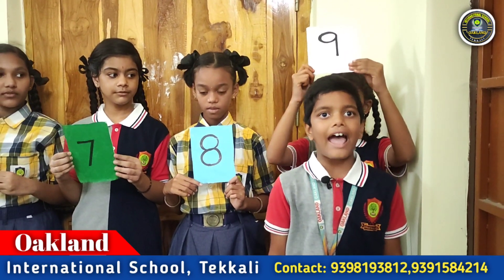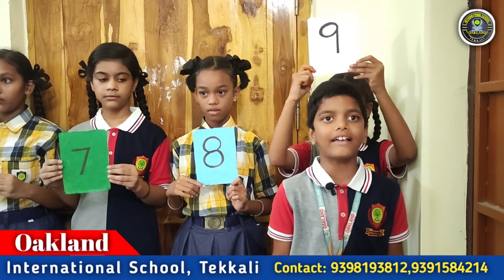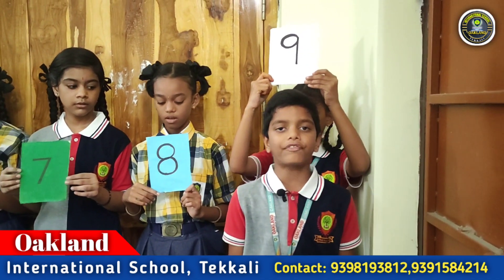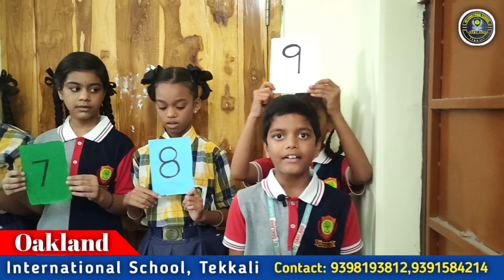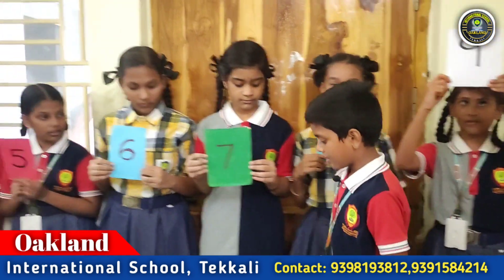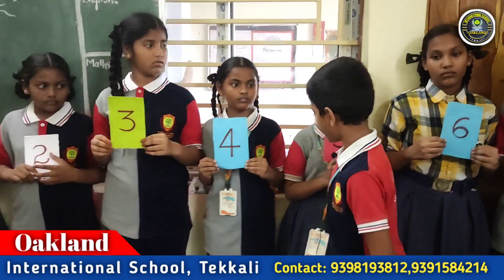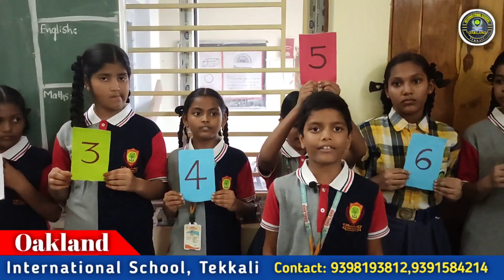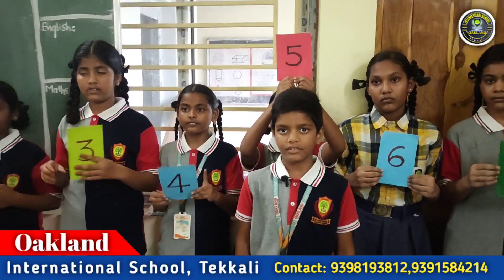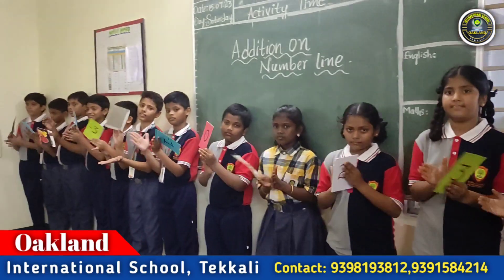We should add minus four. Minus four is the negative integer. Now we should move four steps left side on the number line. One, two, three, four. Now the answer is plus five. Correct answer.